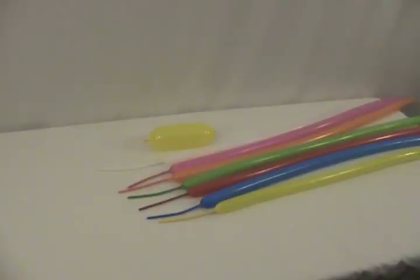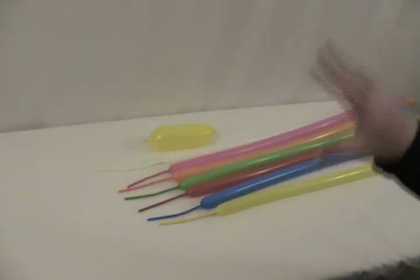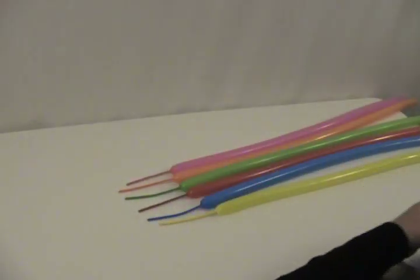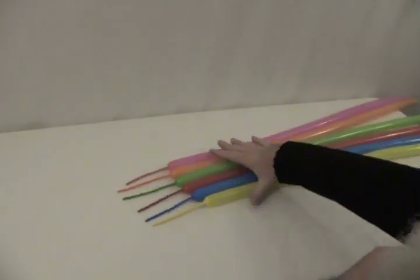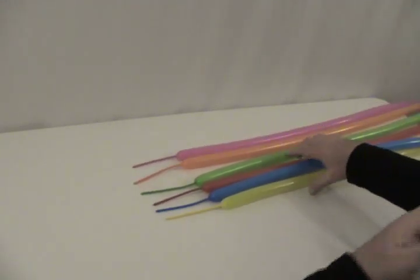I traded out those clear 160s because they're really difficult to see when you're filming. Also, if I'm weaving, if I use different colors it's a lot easier to follow because you can tell where each balloon is going. So I've got six differently colored 160s instead of the clear so you can see what I'm doing.